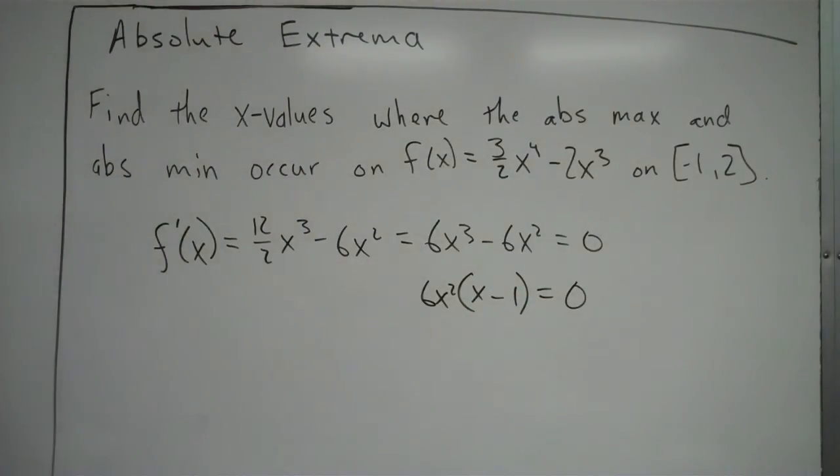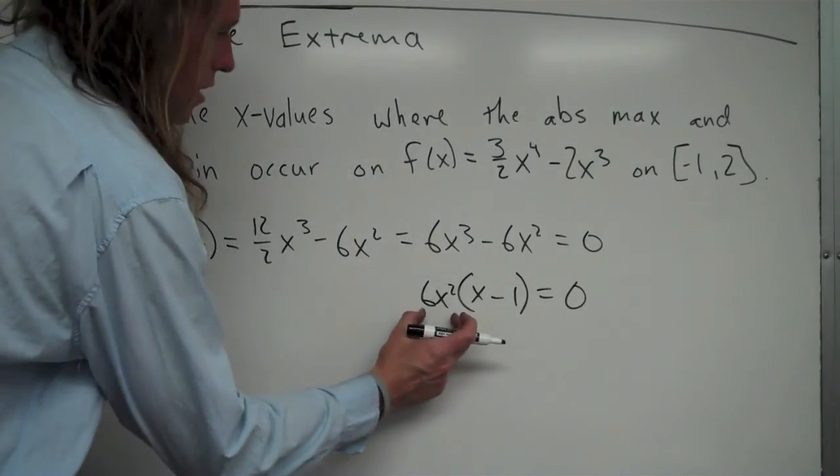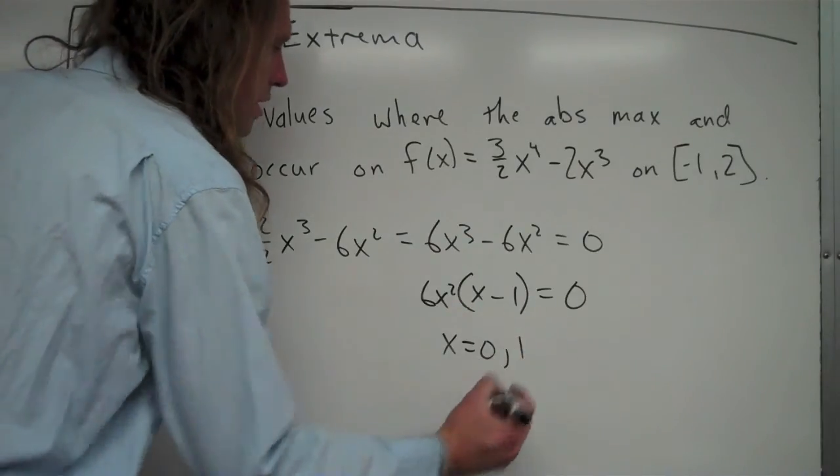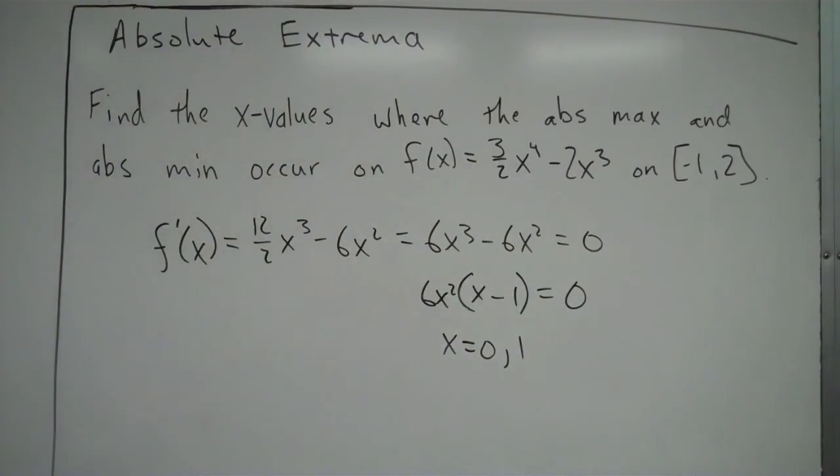Factoring out 6x², I can see this portion would equal 0 when x equals 0. This portion would equal 0 when x equals 1. So I have two zeros: one at x = 0 and one at x = 1.